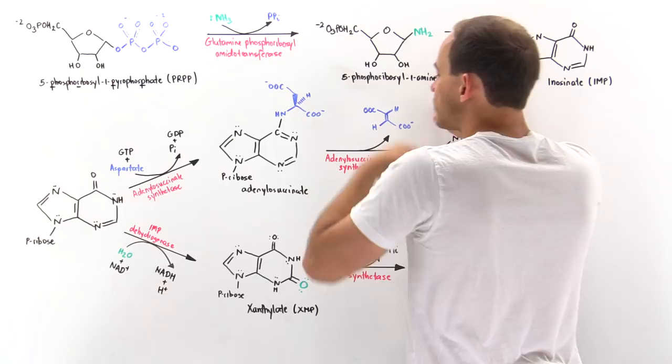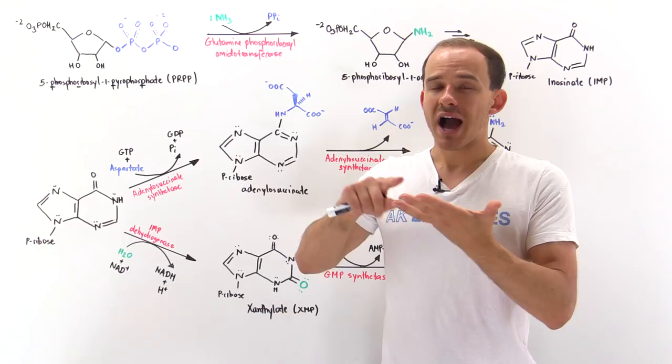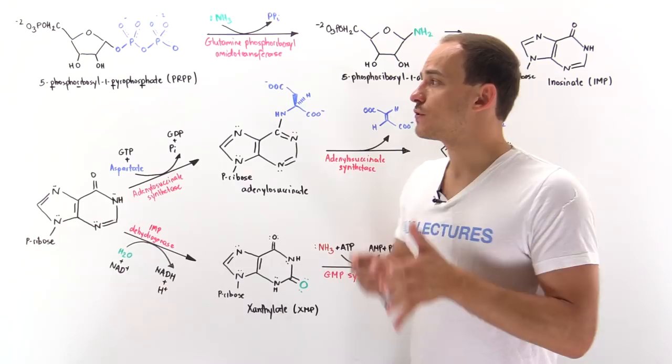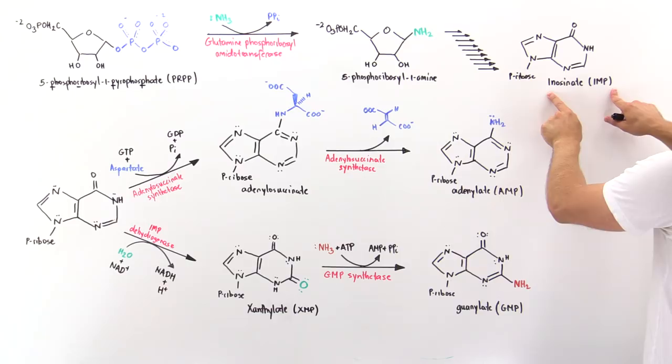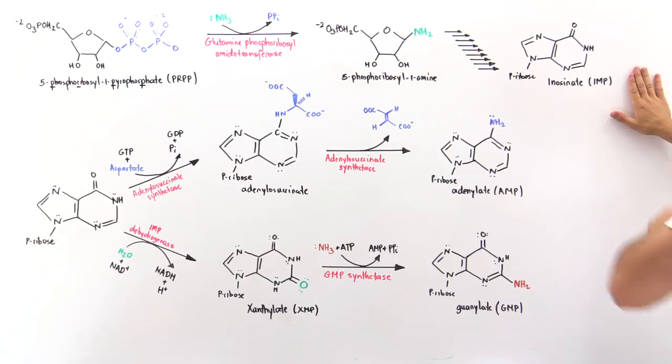The next step is actually a series of 10 steps. Obviously I don't have all the 10 steps on the board because I don't think they're very high yield. What you have to know about these 10 steps is they require a bunch of ATP molecules. They require glycine, aspartate, as well as folic acid, tetrahydrofolate. So to go from 5-phosphoribosyl-1-amine to IMP, we need glycine, aspartate, tetrahydrofolate, and ATP molecules.